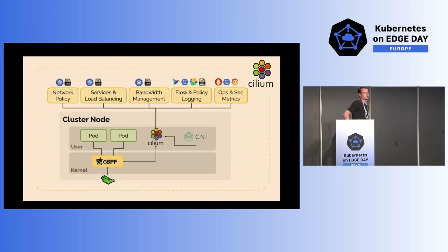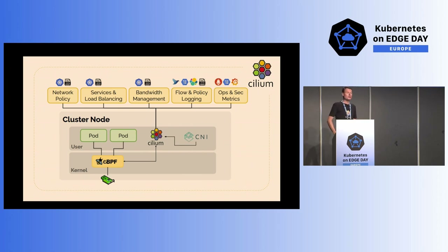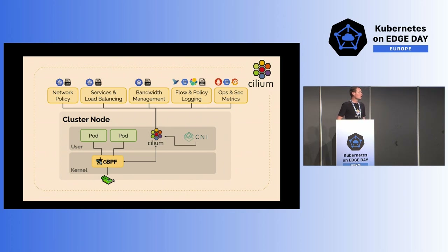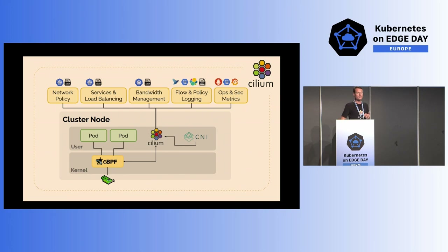With Cilium and ClusterMesh, we provide identity-aware network policies across clusters — we can see identity from other clusters and secure workloads based on their metadata, specifically their labels. We also provide services and load balancing, meaning we can provide services across clusters. Additionally, there's bandwidth management, flow policy logging, and operational and security metrics. We use Hubble as a component which talks to the Cilium agent to inspect and show traffic leaving and arriving at your workloads.